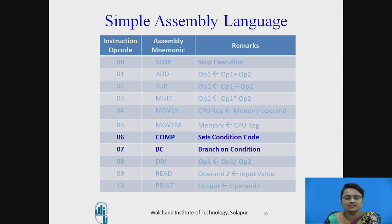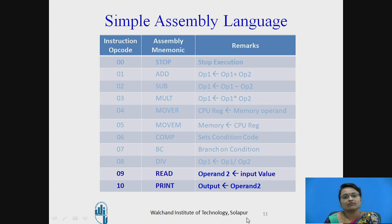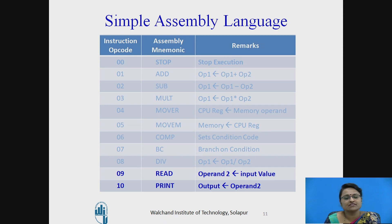BC branches the execution of the statement. The next two are for input and output: READ for reading contents from memory, with opcode 09, and PRINT for displaying content to a memory address.